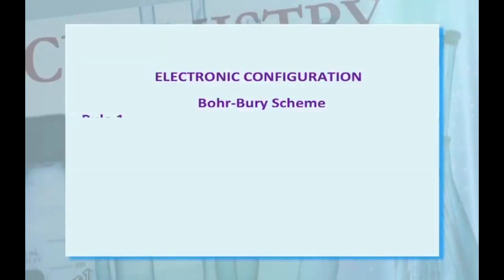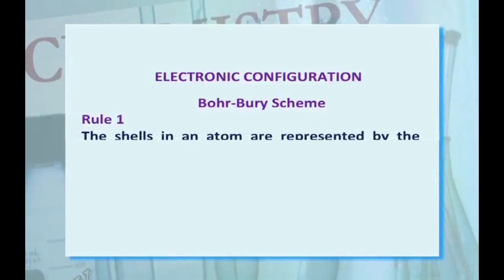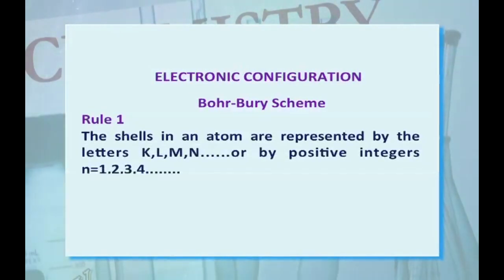Electronic configuration is followed by a rule or scheme called Bohr-Bury scheme. According to this rule, the shells in an atom are represented by the letters K, L, M, N or by the positive integers n = 1, 2, 3, 4 that represents the number of shells: the first shell, second shell, third shell, fourth shell, etc.